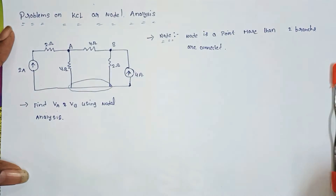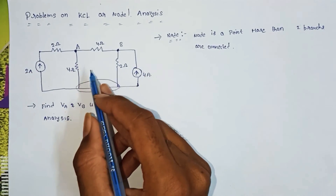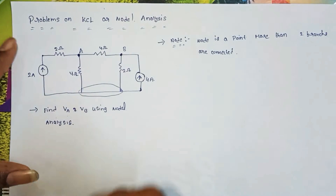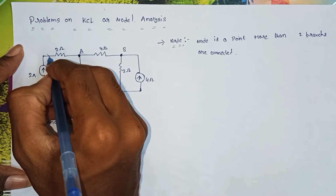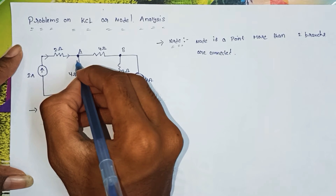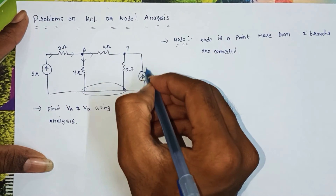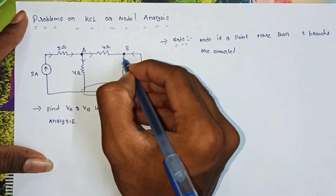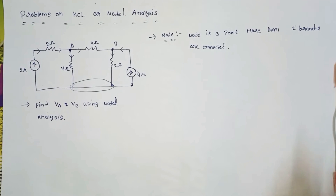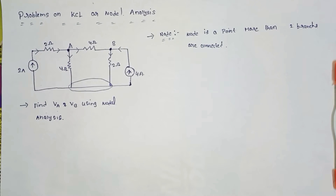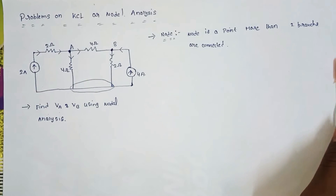So the first step is to identify how many nodes there are — a node is a point where more than two branches are connected. Now let's apply KCL on node A. In KCL, we first assign current directions. The current passing through each branch can be in any random direction — the assumed directions and practical directions are equal.